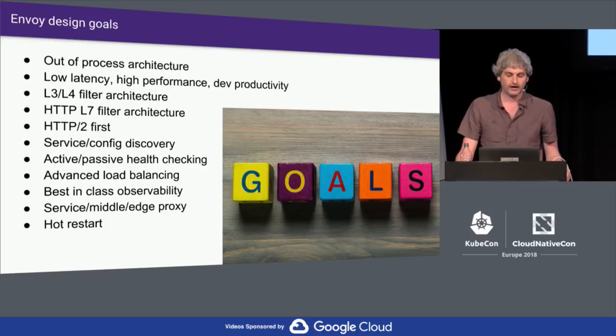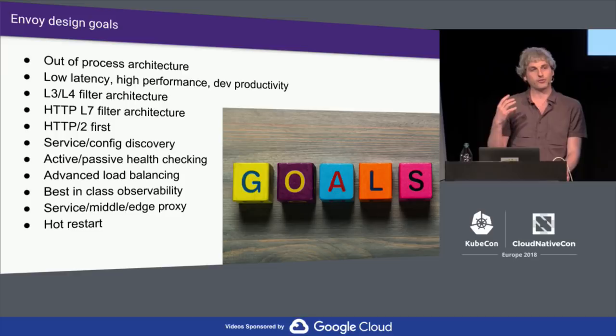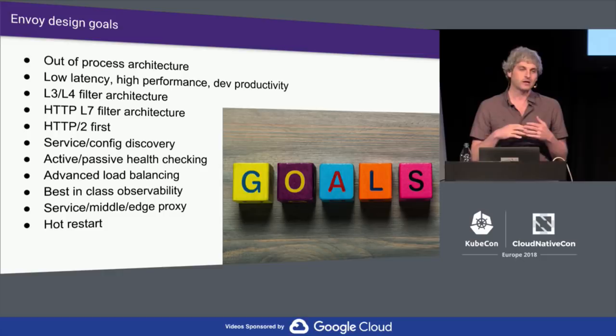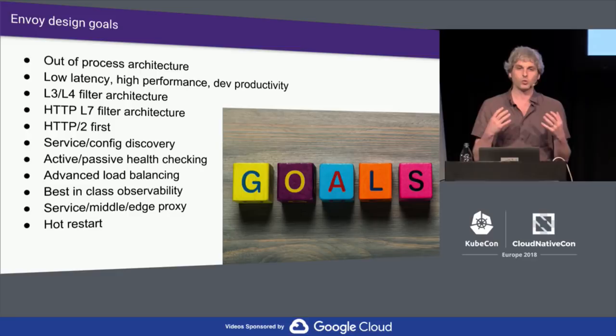Envoy, at its core, is an L3/L4 filter architecture, which means at its core it's a byte proxy. That allows it to be used for multiple protocols, which is pretty key. Today we use Envoy for Redis, HTTP, MongoDB, and we're probably going to do Kafka. From a low-level perspective, we want to have a core with a bunch of functionality that can be extended to handle multiple protocols.